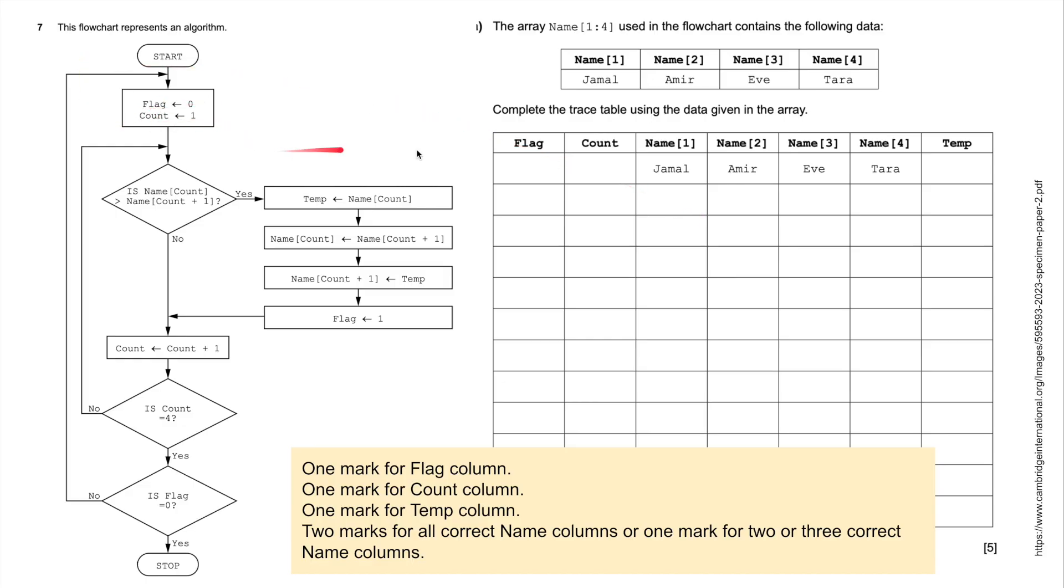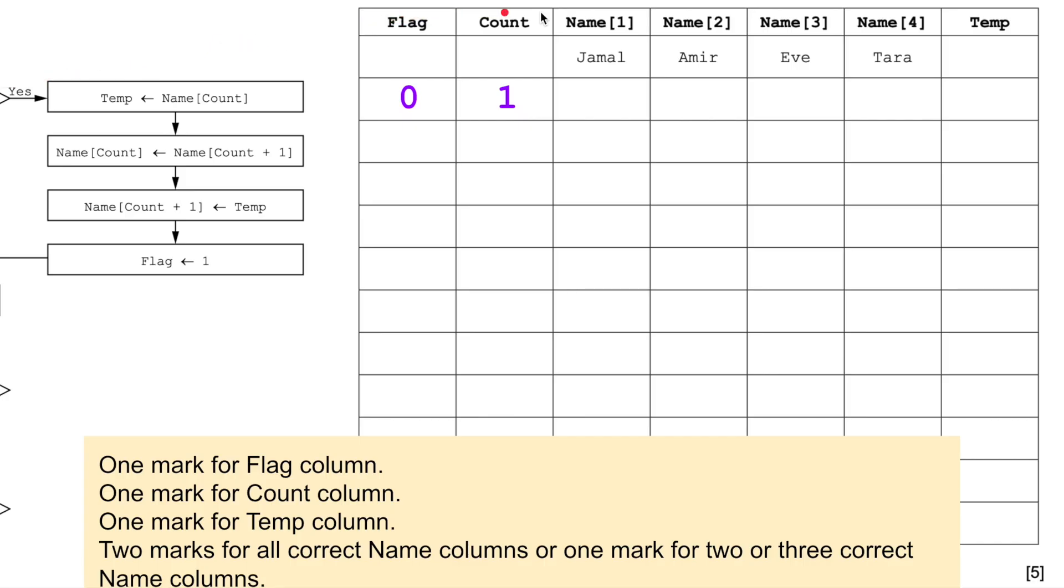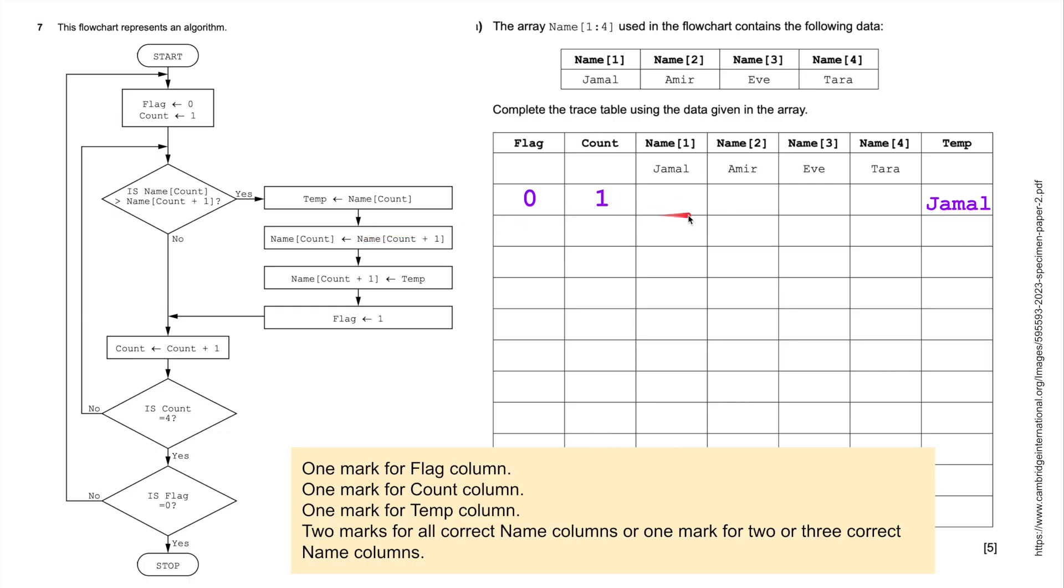Flag has been assigned the value zero, count has been assigned the value one. Is name count, the first one, is name count greater than name count plus one? So basically it's saying, is Jamal bigger than Amir? Well, if we're basing it on number of letters, yes it is, but also if we're basing it on the first letter, then it would be as well. So yes it is, so we go down here. Temp has been assigned the value name count, so Jamal goes in there. Name count gets assigned name count plus one, so let's pop the Amir in there.